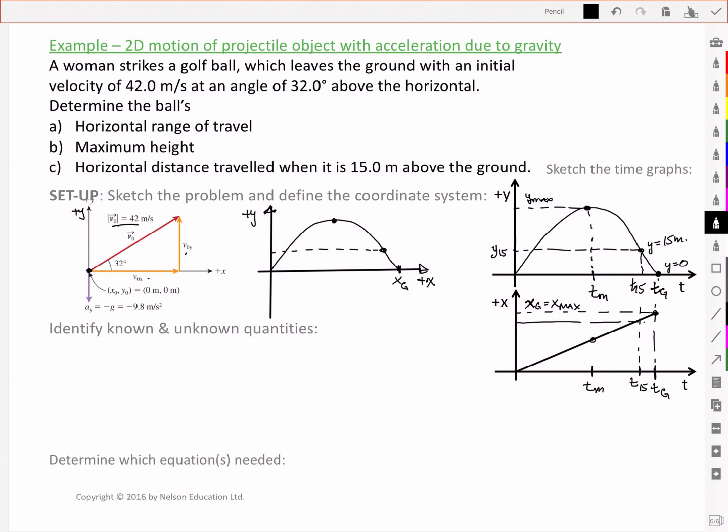Alright, let's identify our quantities. At a time t0 equal to 0, we've got an x0 equal to 0. A v0x equal to v0 cos of theta. That's 42 meters per second cos of 32 degrees. Which will give us a value of 35.6 meters per second. And our acceleration in x along the x-axis is 0.